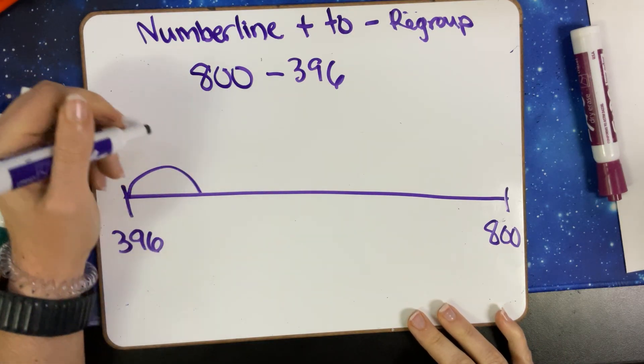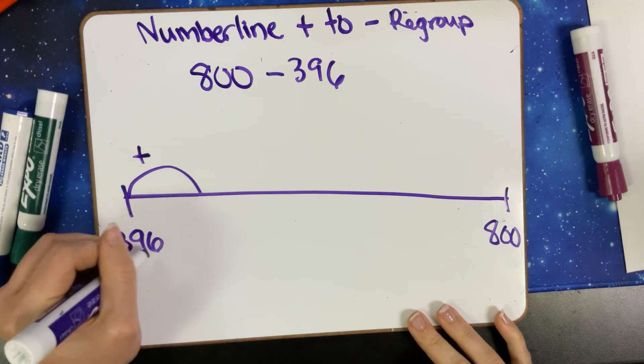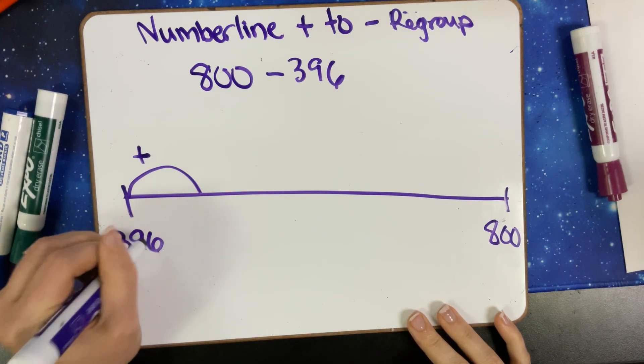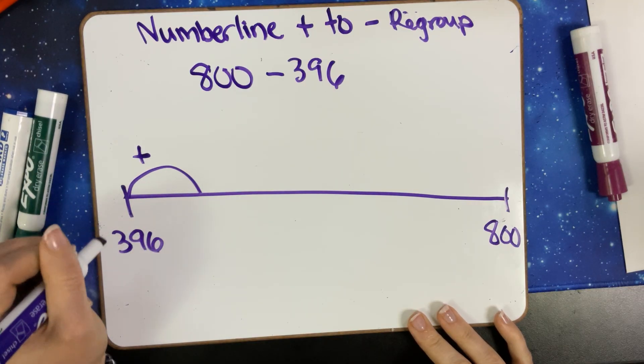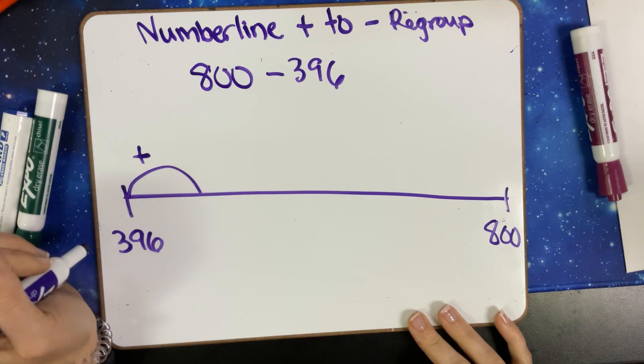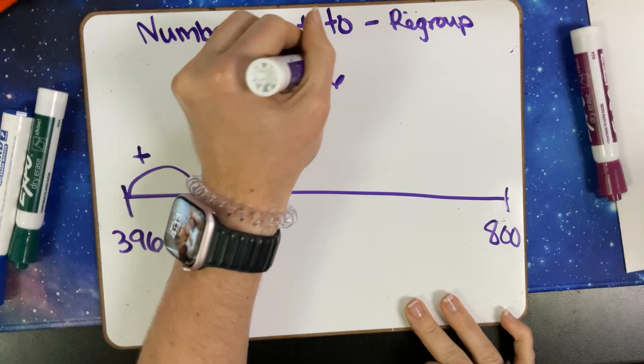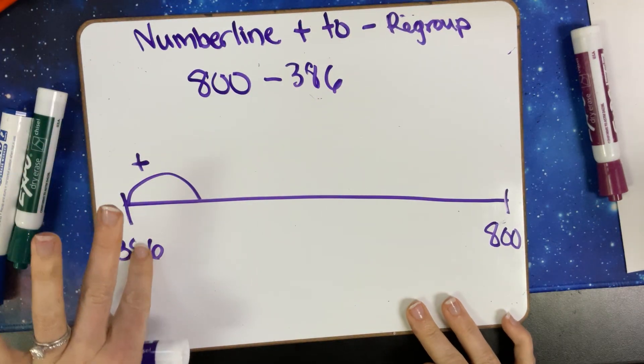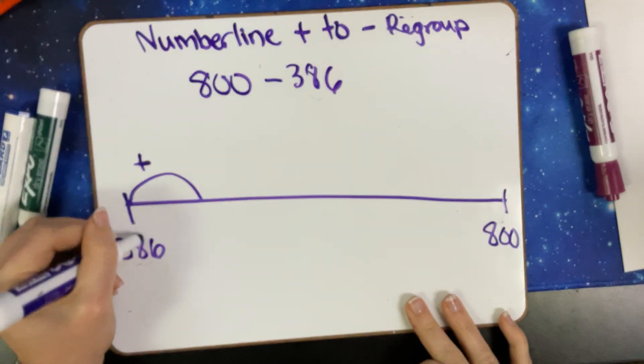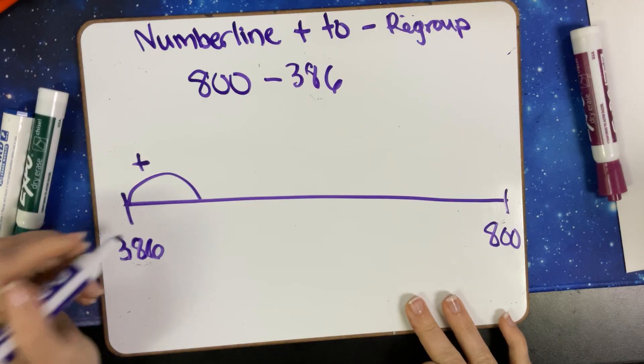So I can start with my ones. To get my ones to a zero, I'm going to add—this will actually get my ones and my tens good. So let's actually change this number up a little bit. We'll make it 386, just so that you can see me regroup twice. So we have 386.